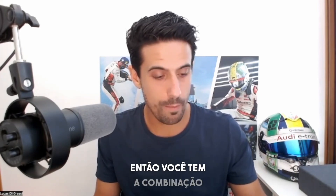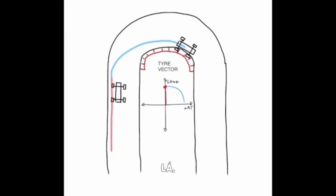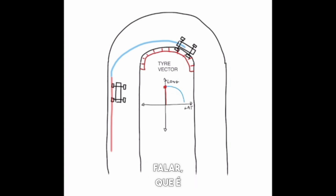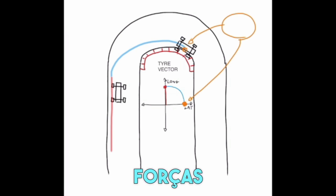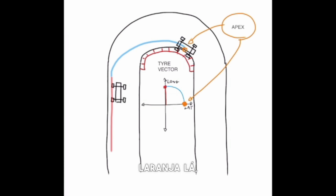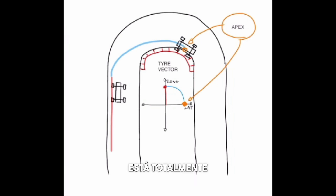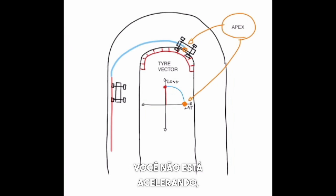The car reaches the apex we just talked about, which is where the forces go to fully lateral — that's this orange dot over there. When the car is at this fully lateral load, all the tire force is on the lateral side and you are neither accelerating nor decelerating the car.